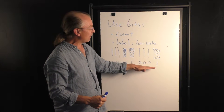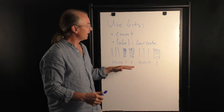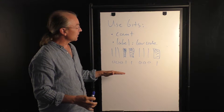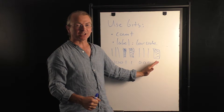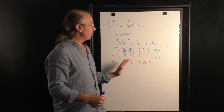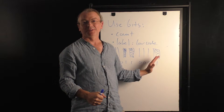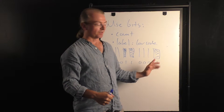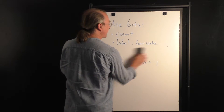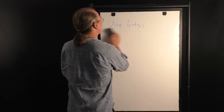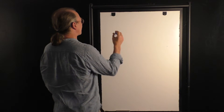And now you see how the power of information comes in. Because with a relatively small number of bits, we can label a very, very large number of things. To get a sense for how many things we can label with bits, let's note the following feature.